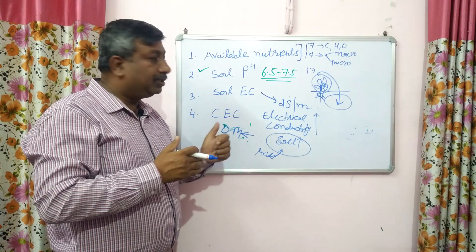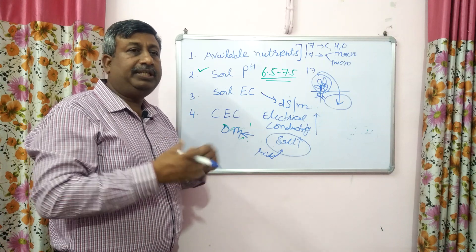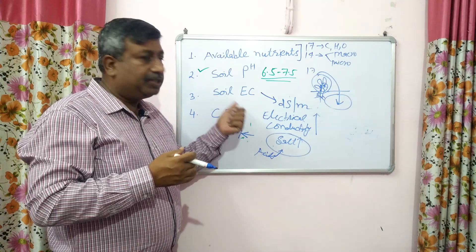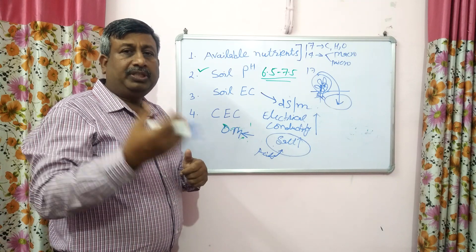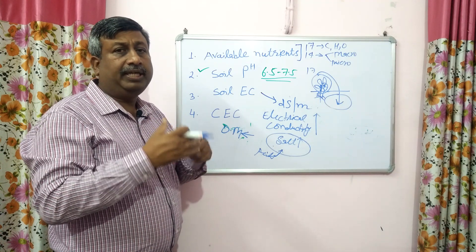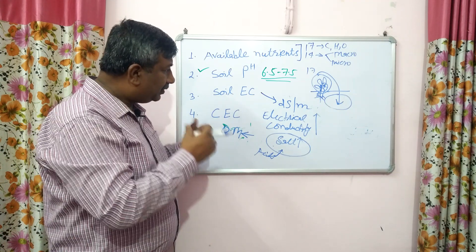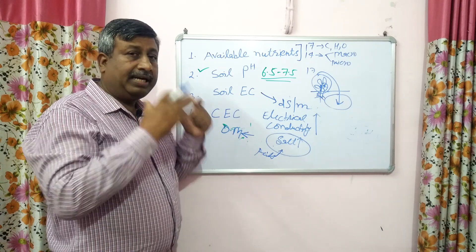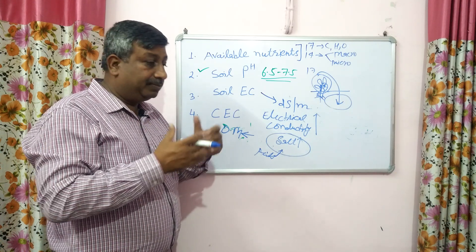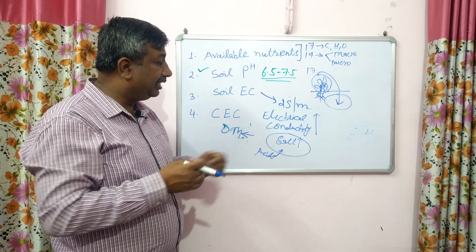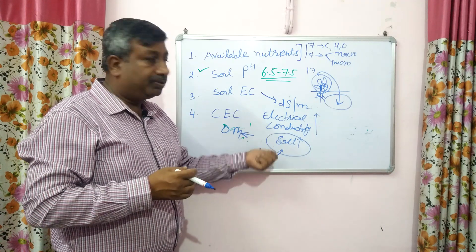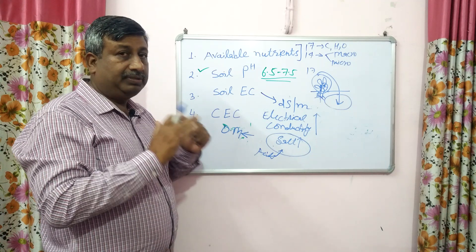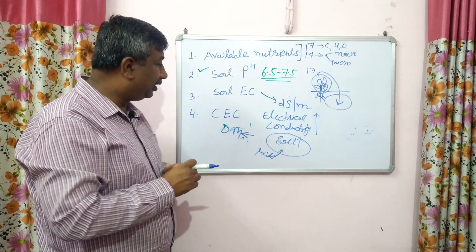If salt content increases, the detrimental effect on plants will be shown. Soil salinity is problematic when EC is more than 4 dS/m. Through the neutralization of salts by organic acids produced during decomposition, electrical conductivity is reduced. This is a very desirable effect on the plant.